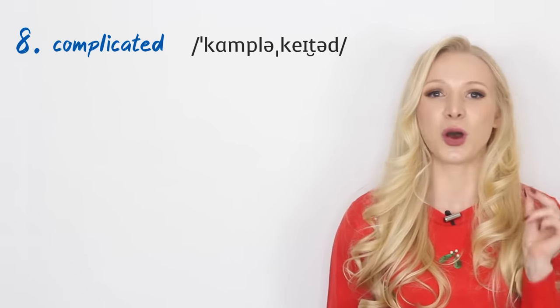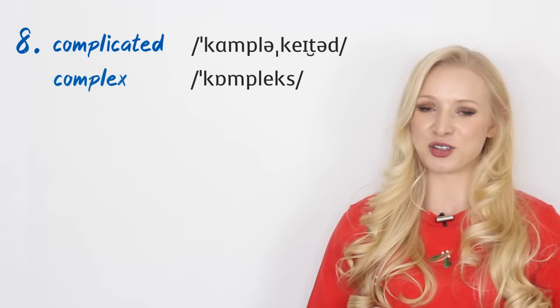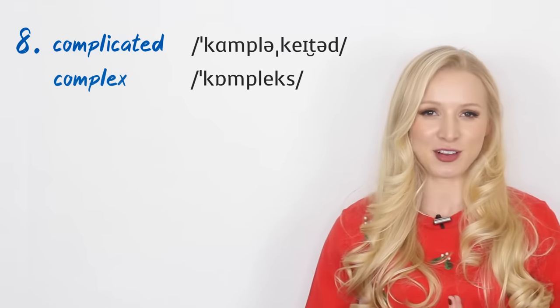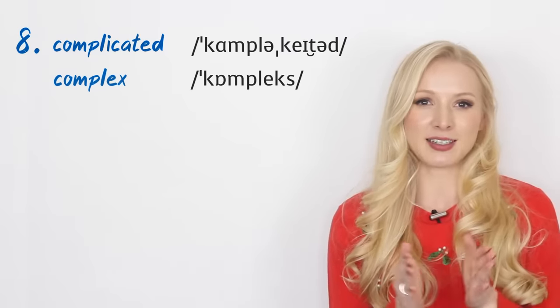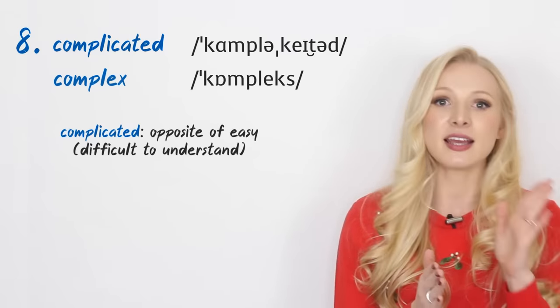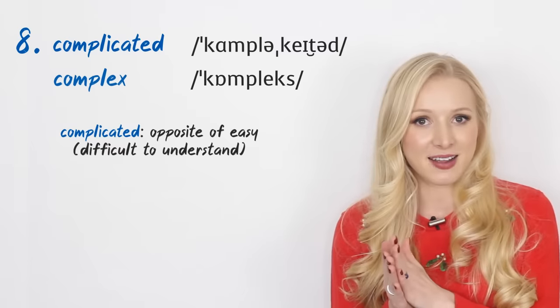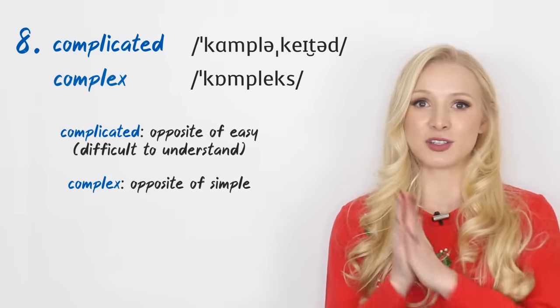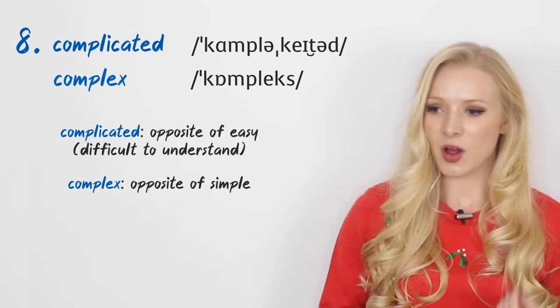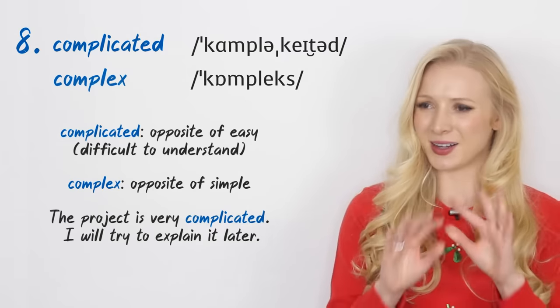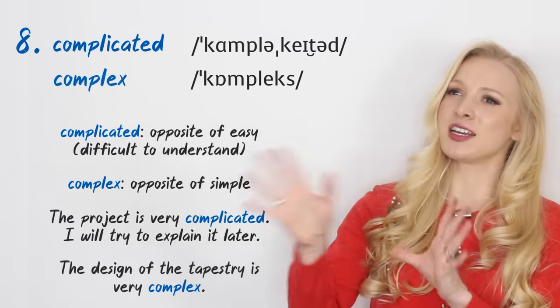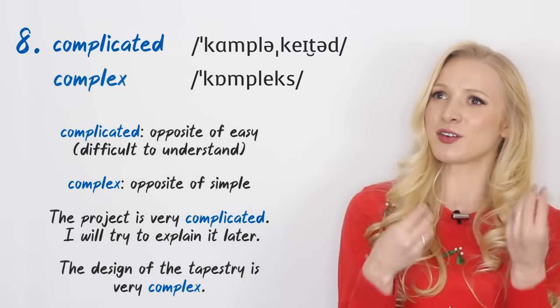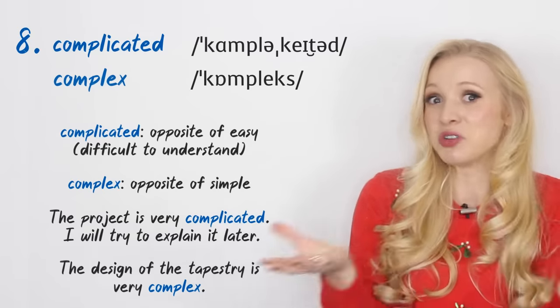Number eight, we have complicated and complex. In many situations, these can be used interchangeably, but sometimes they can't. And a good way to think of this is that complicated is the opposite of easy and complex is the opposite of simple. An example: the project is very complicated, I'll try and explain it later. Or complex: the design of the tapestry is very complex. It's not necessarily difficult to understand, it's just not simple.